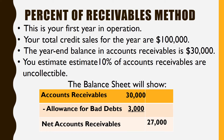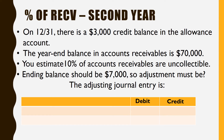Hopefully you understand the concept, because I'm now going to add one more thing. It's very seldom that this is your first year in operation, and so in the second year or any year after that, you need to know what the beginning balance is in order to figure out your adjusting journal entry.